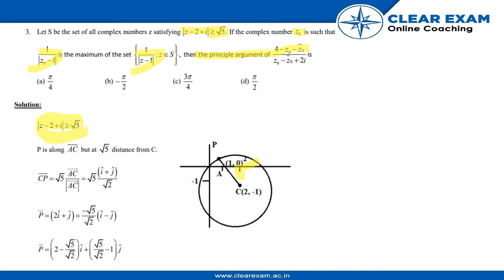Let's solve this. CP vector will become √5 · AC vector divided by the magnitude of AC vector. It comes out to be (√5/√2)(i + j).